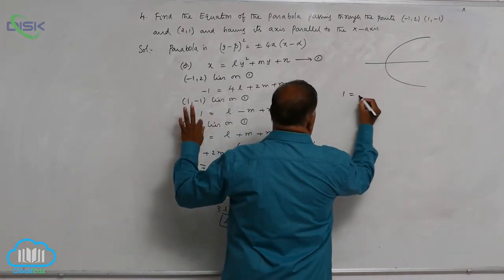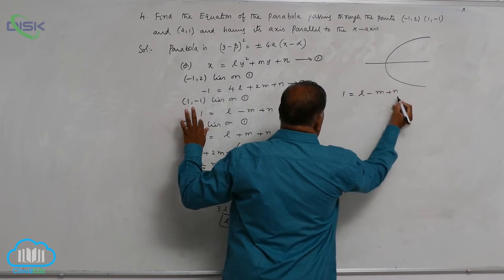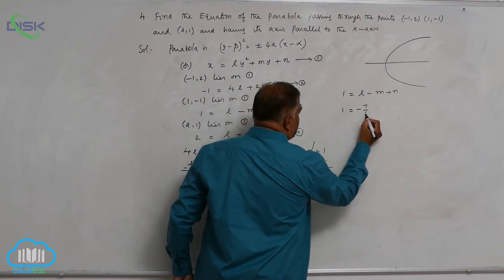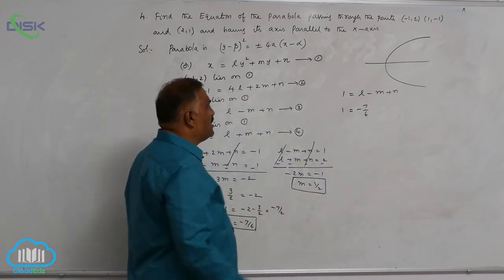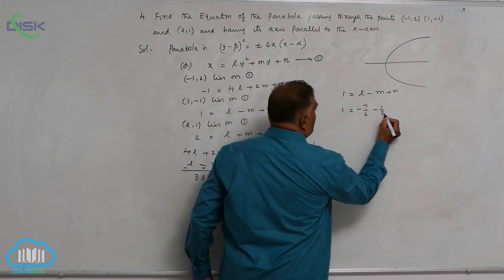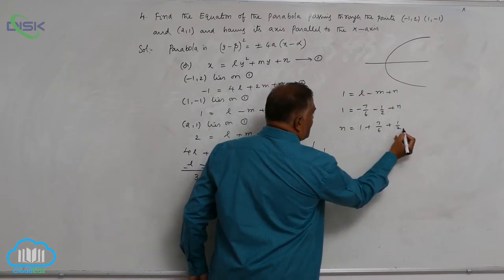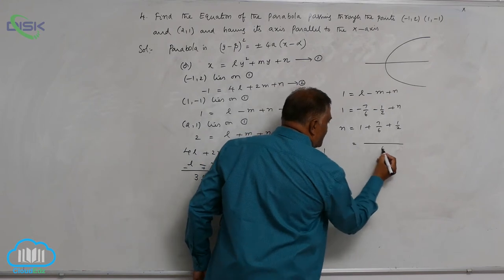1 = l - m + n. Now, l value is -7/6 and m value is -1/2 + n. So n = 1 + 7/6 + 1/2. Let us take LCM 6.